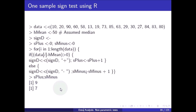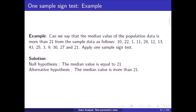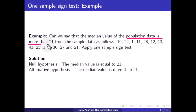Example 2: Can we say that the median value of the population data is more than 21? The sample data is: 10, 22, 1, 11, and so on. We apply the one sample sign test. The null hypothesis is that the median equals 21 and the alternative hypothesis is that the median is more than 21, because the question is whether the population data is more than 21 or not.